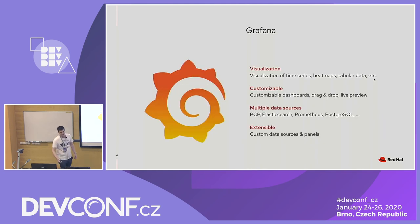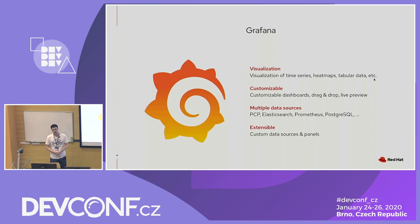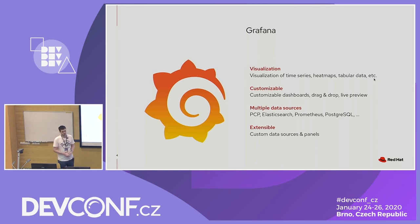Grafana is a web application for the visualization of metrics. It supports visualization of time series data, heat maps, table data, world maps, and a lot more. It's highly customizable, so you can create your own dashboard. You click which type of visualization you want — for example, a line chart — then you select a query: which data you want, which metrics you want to visualize.